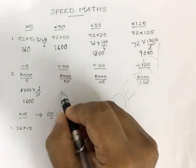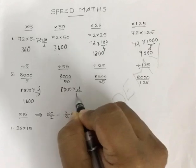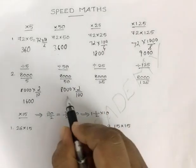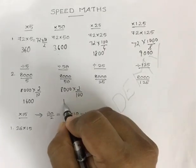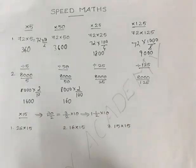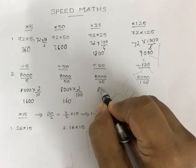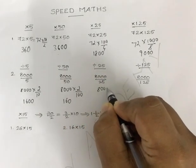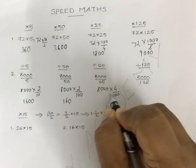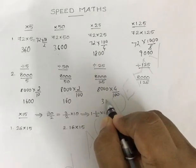Similarly, divided by 50 means 8000 into 2 by 100, so 80 into 2 gives 160. Divided by 25 means it is 8000 into 4 by 100, so 80 into 4 gives 320.